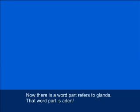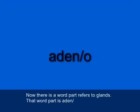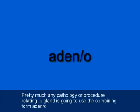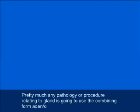There's a word part that refers to glands, and that word part is aden. The combining form is adeno — A-D-E-N-O. Pretty much any pathology or procedure relating to a gland is going to use the combining form adeno.